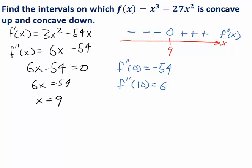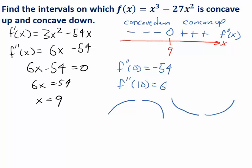On the interval to the left of 9, the second derivative is negative. That means the first derivative is decreasing — the slopes are decreasing — and therefore the graph must be concave down. On the right side, where the second derivative is positive, that means the first derivative is increasing, so the slopes are increasing and the graph is concave up. So anywhere the second derivative is negative, the function is concave down; anywhere the second derivative is positive, the function is concave up.